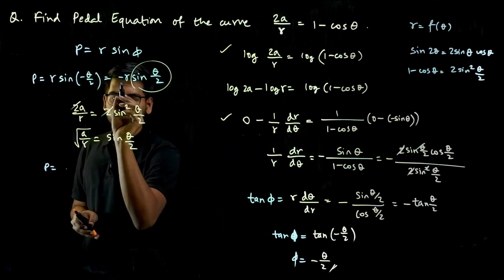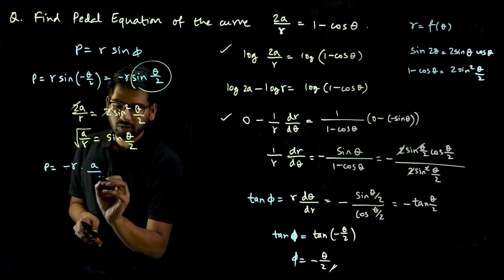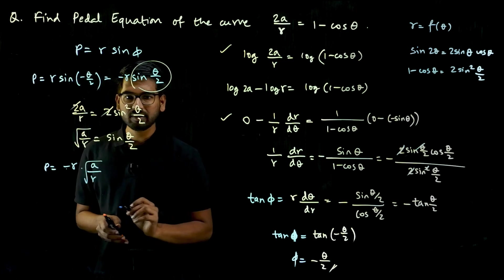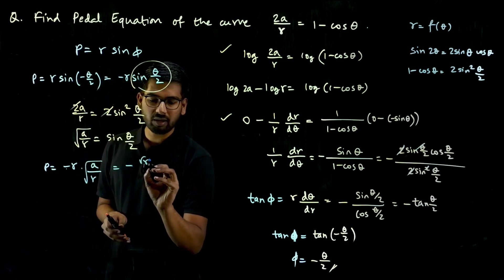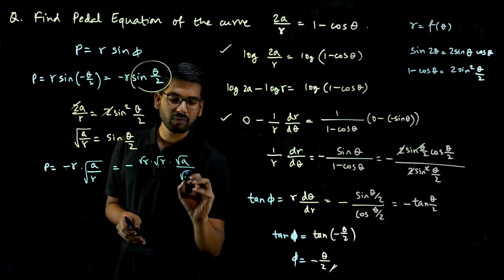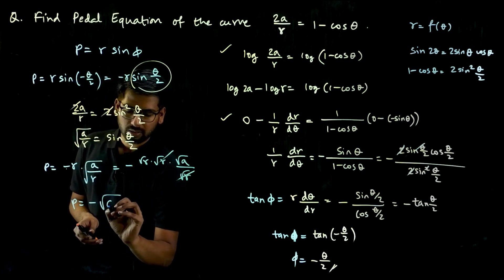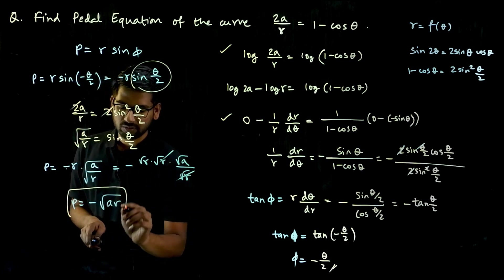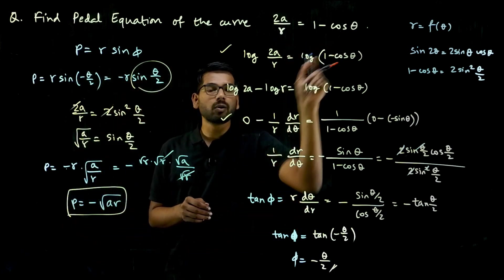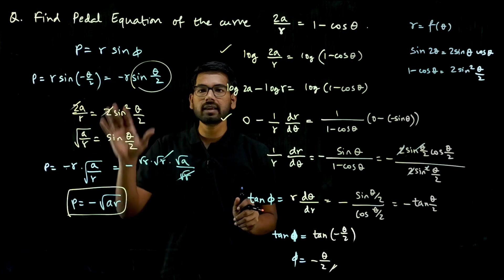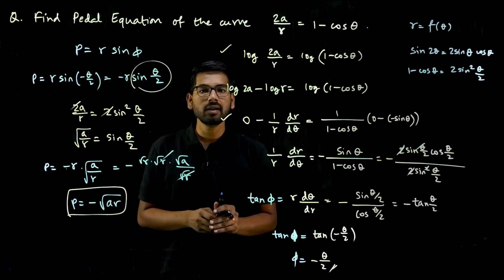Substituting sin(θ/2) = √(a/r) gives p = -r · √(a/r). Writing r = √r · √r, one √r cancels with the √r in the denominator, leaving p = -√(ar). This is the pedal equation of the polar curve 2a/r = 1 - cos θ — the curve equation expressed in terms of p and r only, with θ eliminated. For more M1 questions, check the course link in the description and subscribe for more videos.